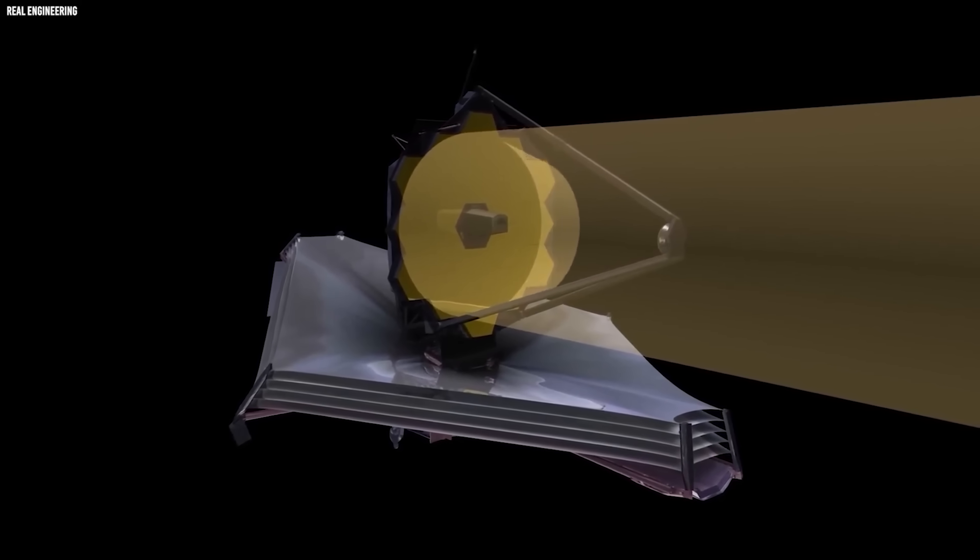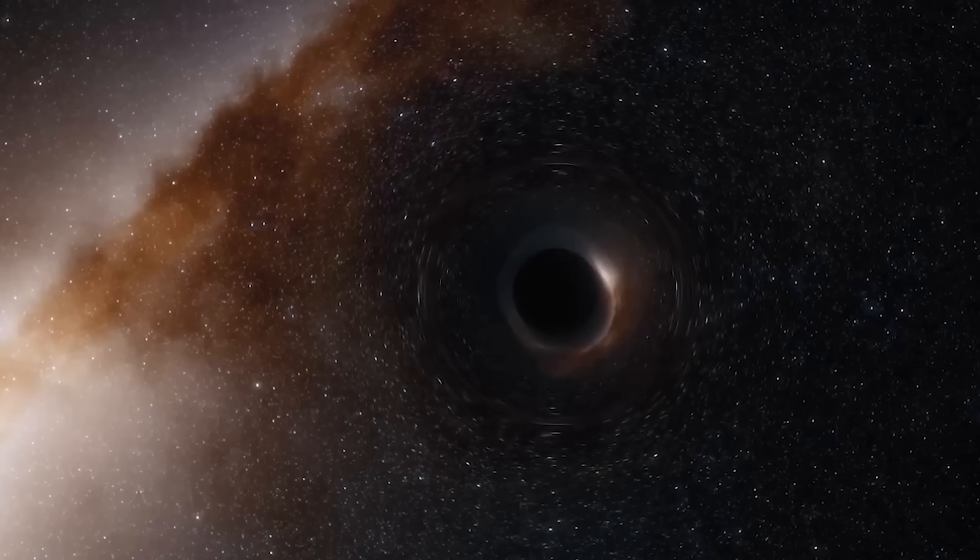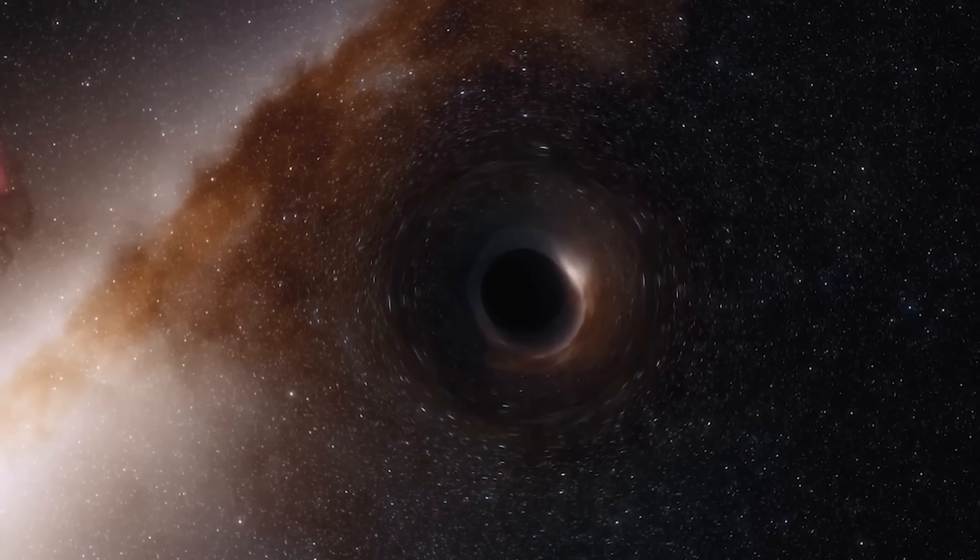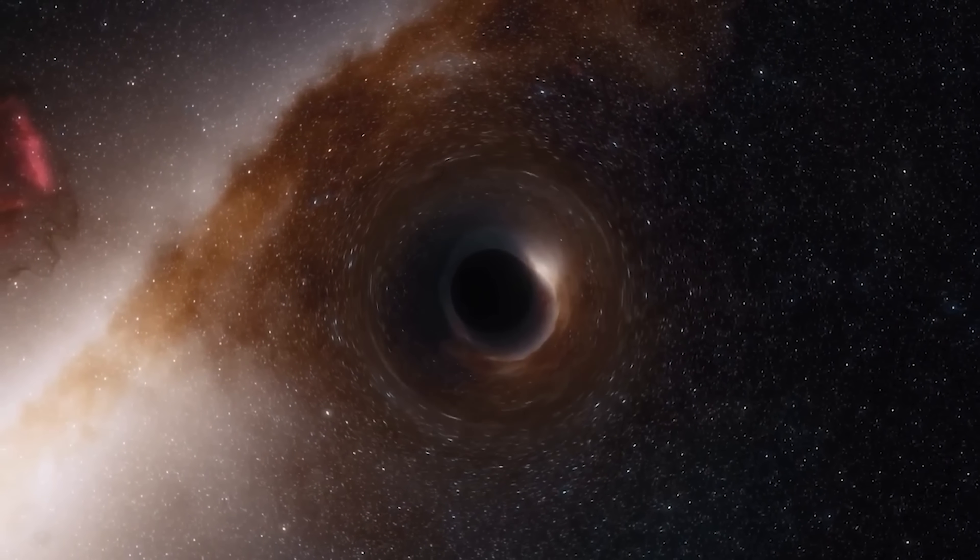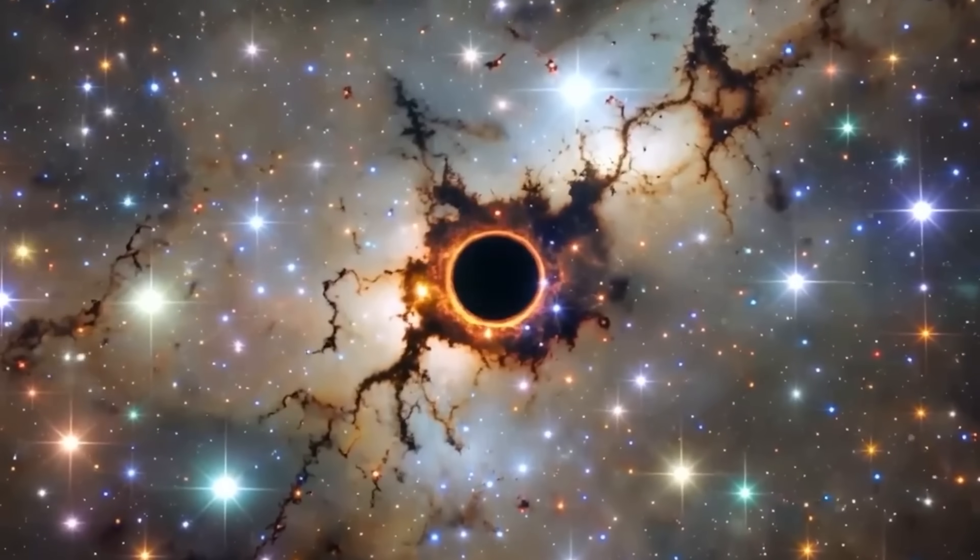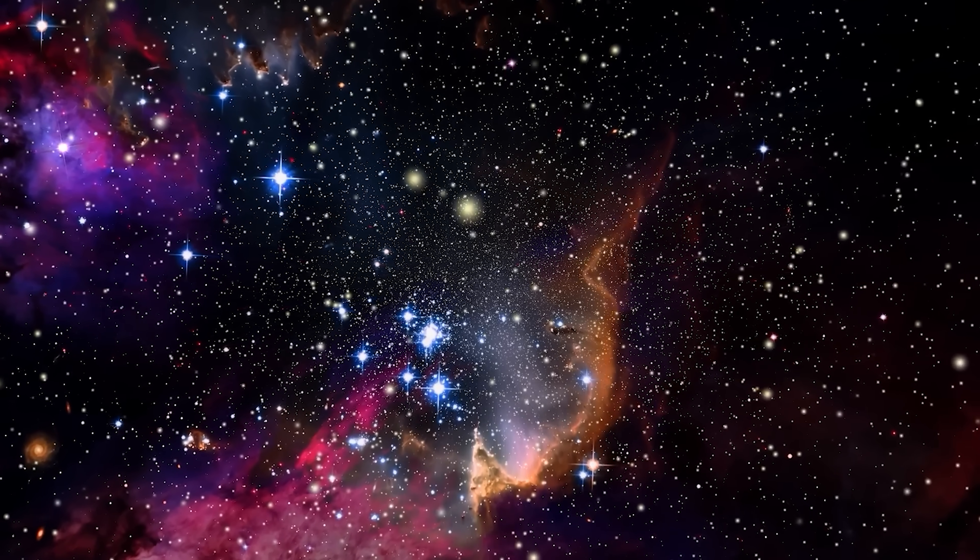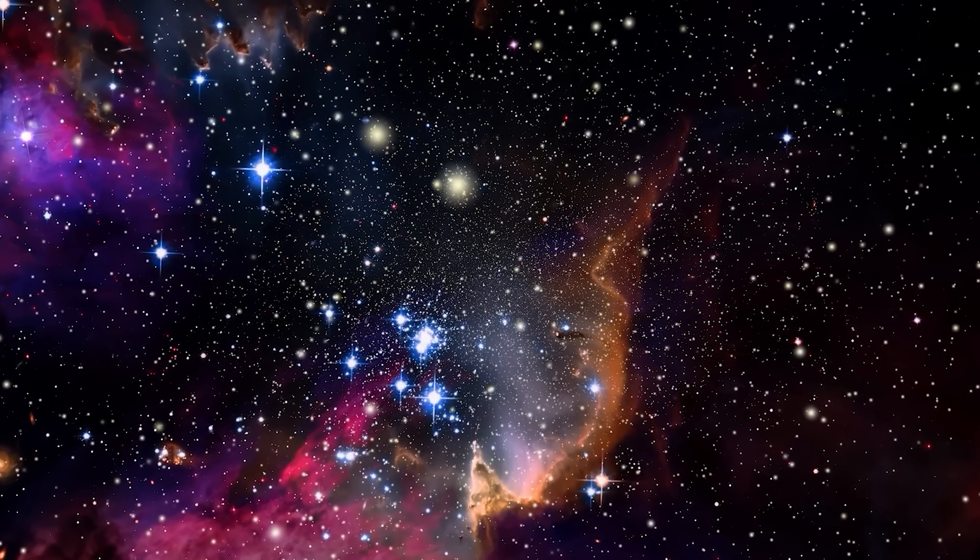As Webb continued collecting spectra from the galaxy, something else became clear. The stars around the black hole moved in a pattern seen only in mature galaxies. They weren't chaotic. They weren't random. They were orbiting something central, massive, and quiet. The heart of the galaxy was already settled.